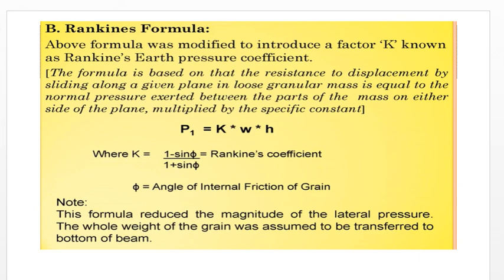The Rankine formula modified the hydrostatic formula by introducing the factor k — the Rankine earth pressure coefficient. In this case, P1 equals k times W times H, where k equals (1 minus sin φ) divided by (1 plus sin φ), known as the Rankine coefficient. φ is the angle of internal friction of grain. This formula reduces the magnitude of lateral pressure, and the whole weight of grain is assumed to be transferred to the bottom of the bin.